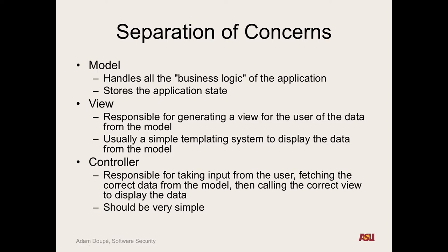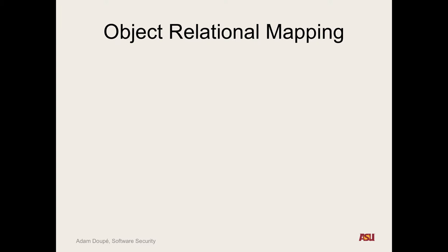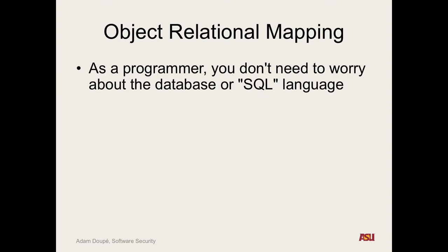One big thing Ruby on Rails introduced was the Model-View-Controller. The other incredibly important thing was object-relational mapping (ORM). In our programming languages we deal with objects, but the database is relational and has no concept of objects — we have to issue queries and iterate over results. The idea with ORM is: programmers are used to objects, so let's let them use objects to interact with the database and abstract away SQL entirely.